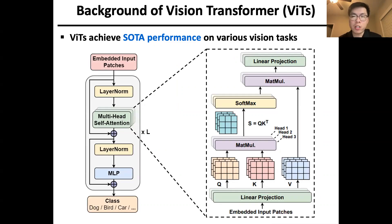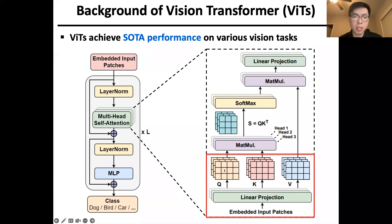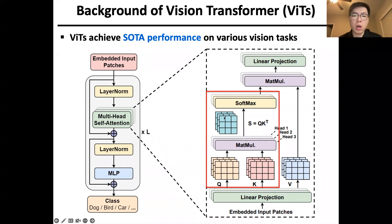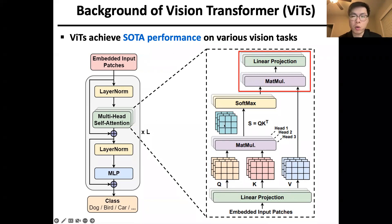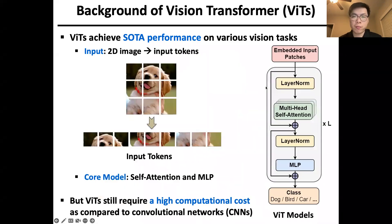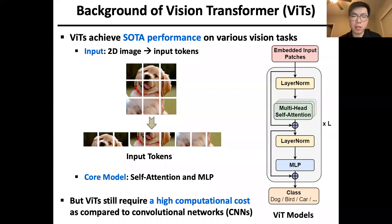The core self-attention is illustrated here. The embedded input tokens are linearly projected to QKV vectors, namely query, key, and value. Each query is multiplied with all the keys to get one row of the attention map, resulting in an attention map with length equal to the number of tokens. The attention map is further multiplied with the value to get the final output. Although self-attention is powerful since it quadratically measures the similarity among all tokens, VITs still suffer from high computational cost as compared to CNNs.